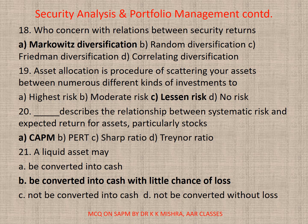Question 19: Asset allocation is the procedure of scattering your assets between numerous different kinds of investments. Options are: A. Highest risk, B. Moderate risk, C. Lessen risk, D. No risk. Correct option is C — to lessen risk.